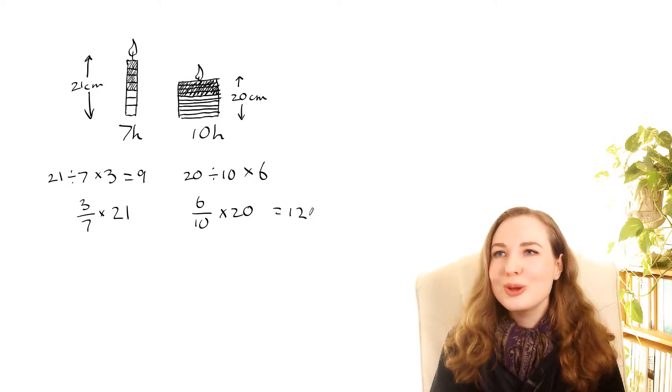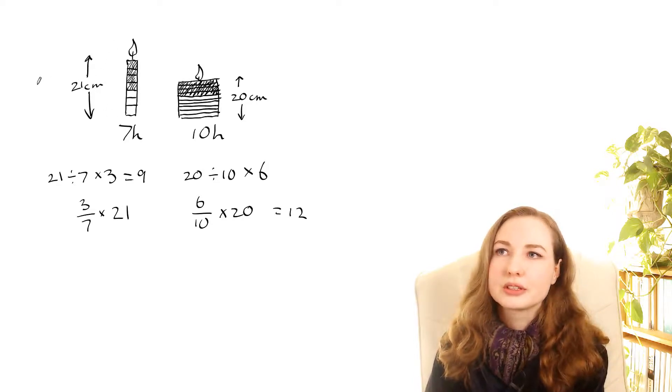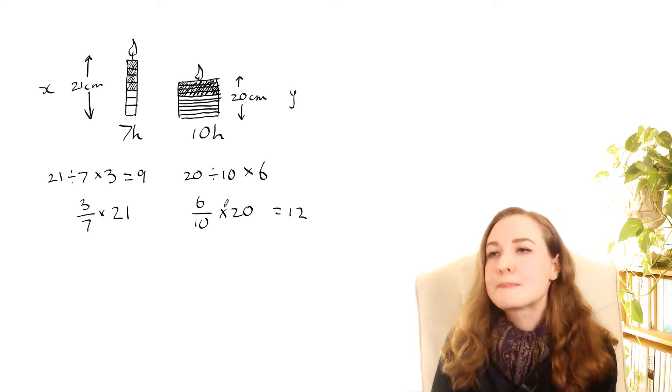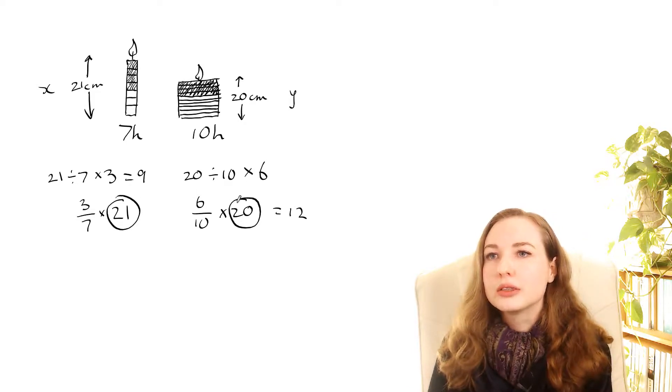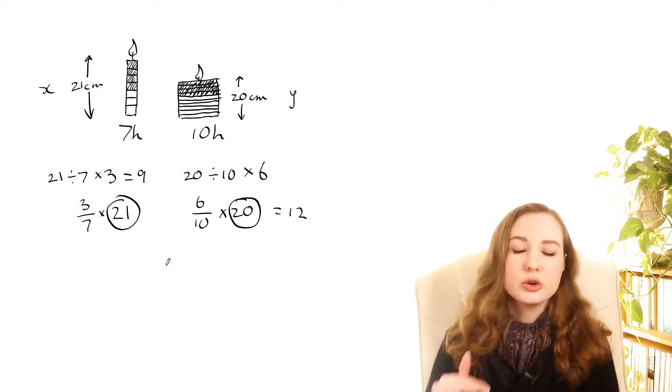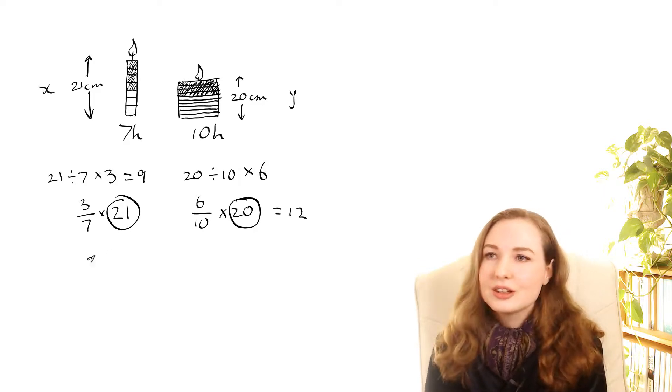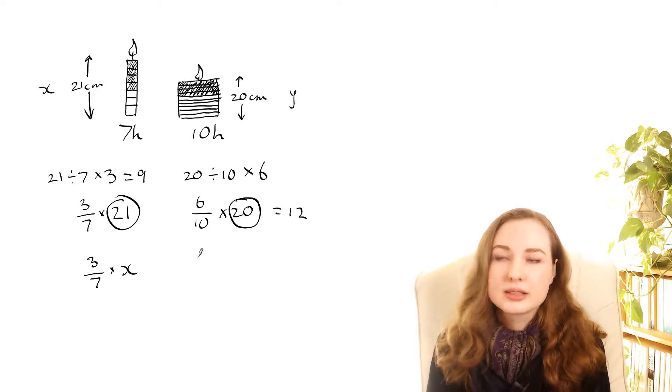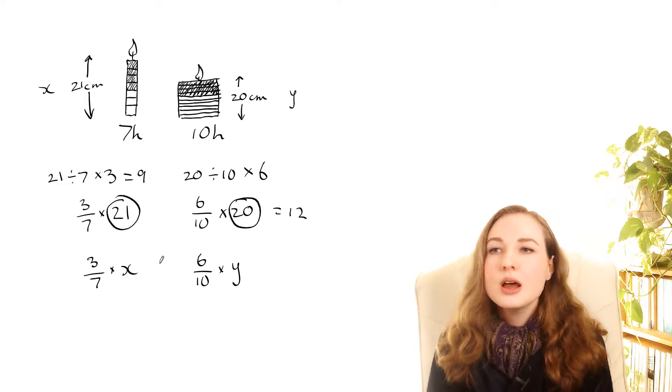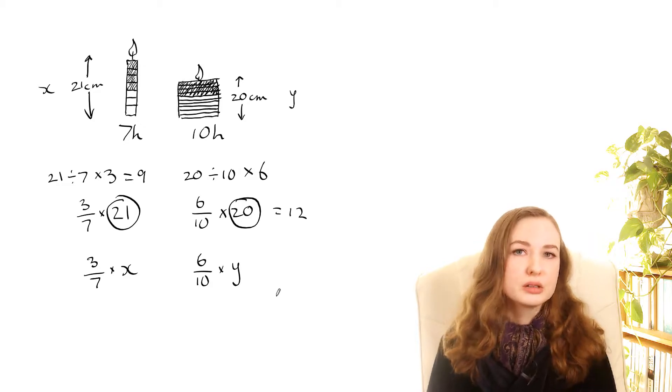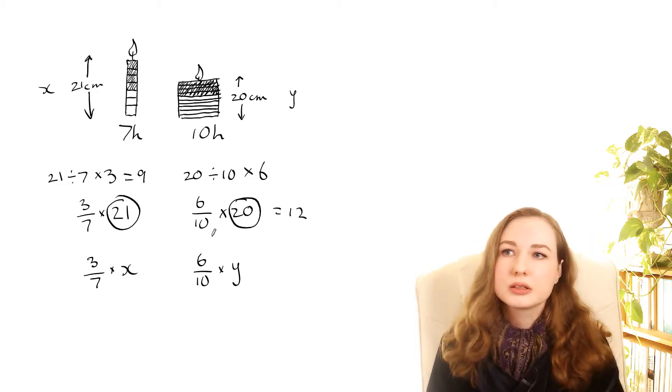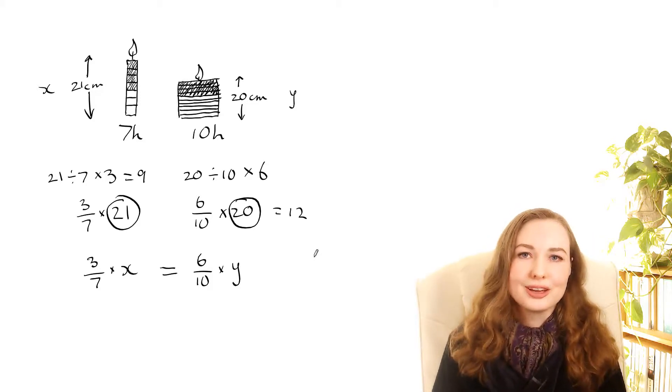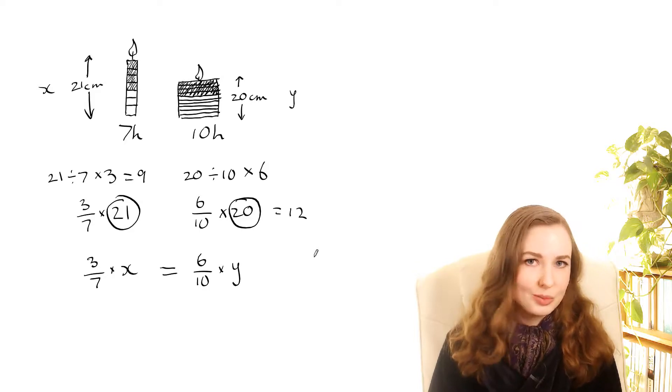Now what we would really like to do is call the height of this maybe x and the height of this one y and turn it into an equation that we can solve in some way. So this was our guess here, the 21, and this was our guess for this one. So what you want to do is just take your guesses and replace them with x and y. So 3/7 of x instead of 3/7 of 21. And for this one the height it's going to end up as is 6/10 of y. And then we know that these two things are supposed to be the same number because that was what they said, that after four hours burning the two candles are the same height. So we could say that we want 3/7 of x to equal 6/10 of y. So that's how easy it is to turn a guess and check into an equation. You just take your guesses and replace them with x and y.